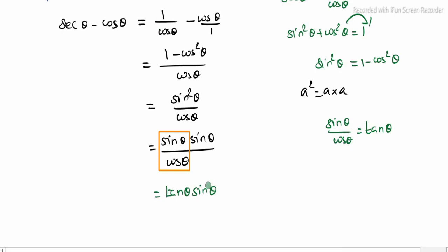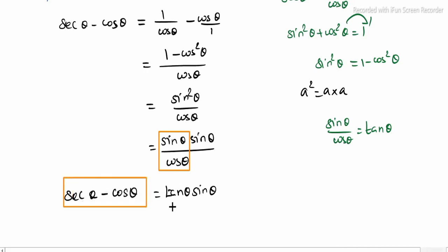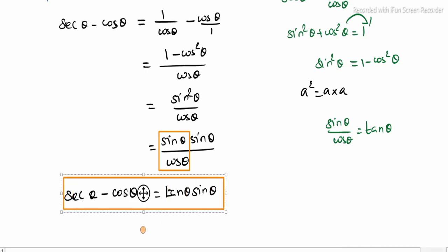So LHS: sec theta minus cos theta is equal to tan theta into sin theta. Hence proved. Thank you.